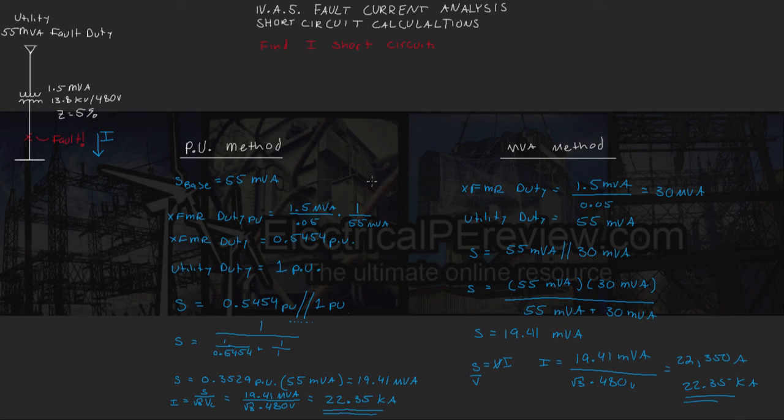But be familiar with the other one in case a specific question asks for it. For some practice, I suggest playing around with these numbers. Use a different utility fault duty, different transformer values. Solve it by both methods. You'll know if you're doing it right, if you get the same value for your fault current and your fault power, your complex power, as you did using the per unit method as the MVA method.